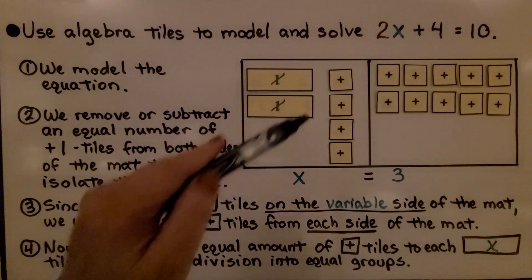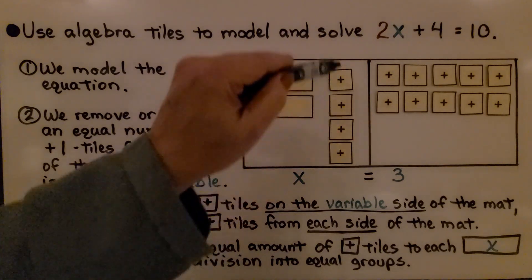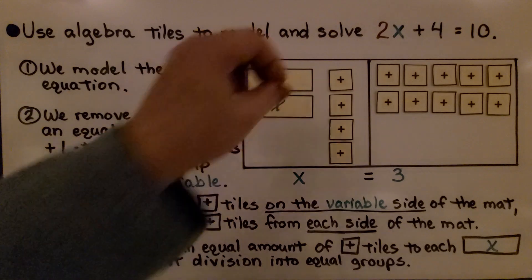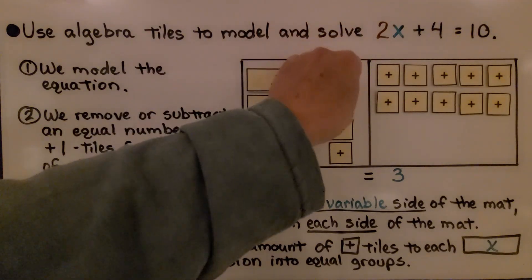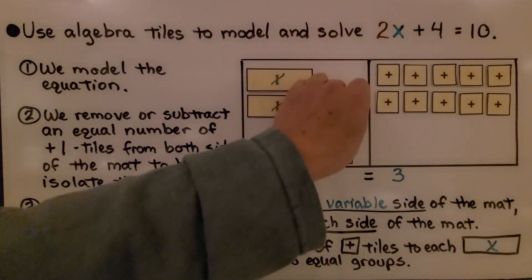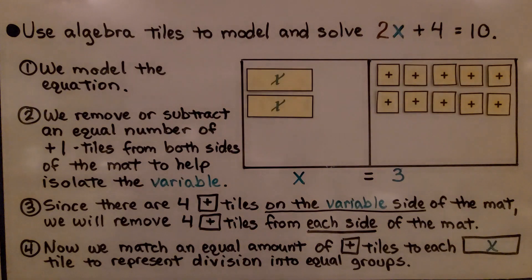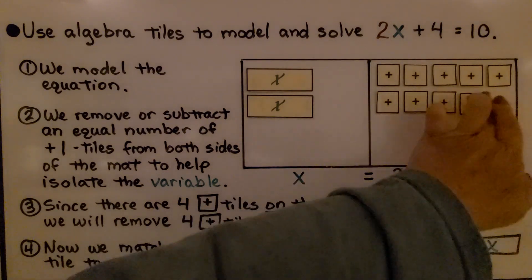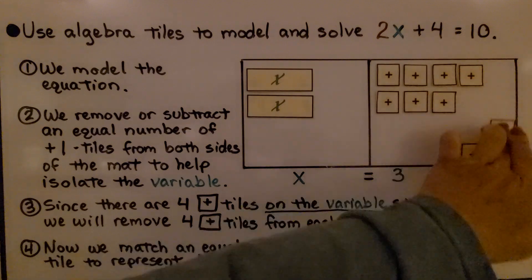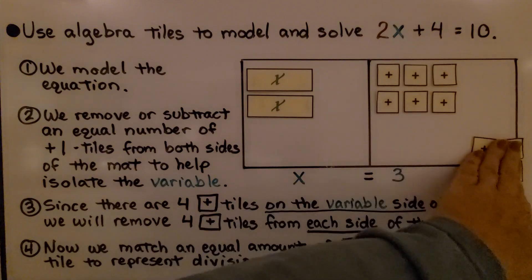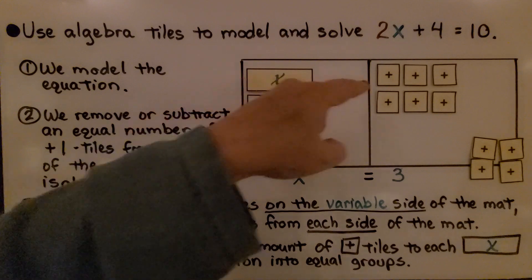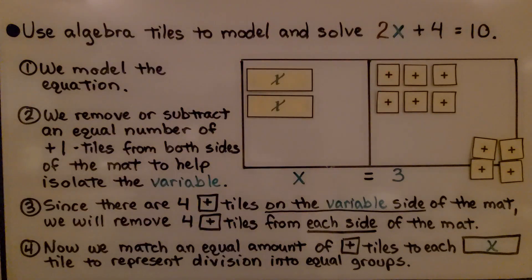Since we have 4 of the plus squares on the left, we take them away — 1, 2, 3, 4. Then we take away 4 from the right side as well — 1, 2, 3, 4. That leaves us with 2x is equal to 6.